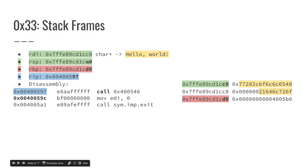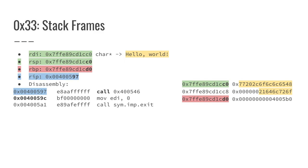The base pointer points exactly 16 bytes higher than the stack pointer, which means the stack frame here is only 16 bytes big — two words. The string hello world is located here on the stack, and the instruction pointer points to this low memory address, which is this line of assembly right here. I'm simulating the execution of the hello world program, and it's going to call the main function at address 0x400546.